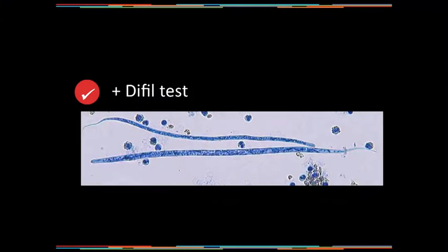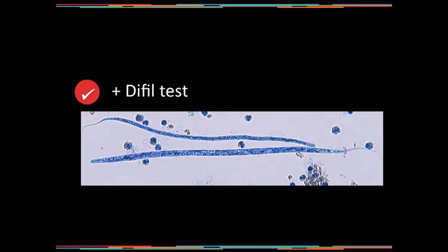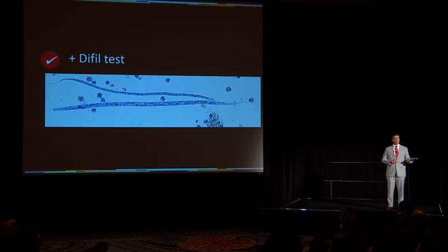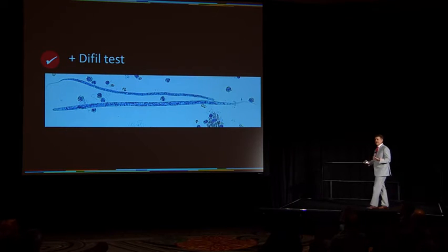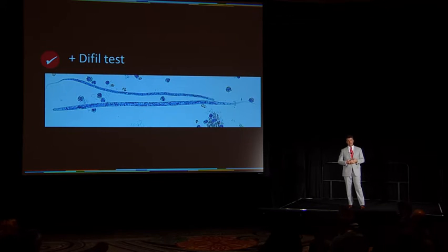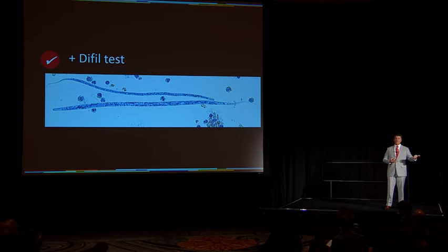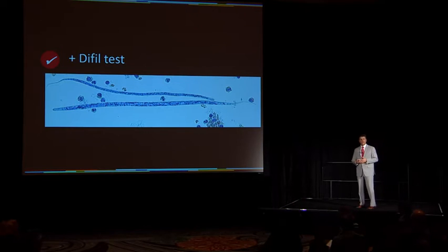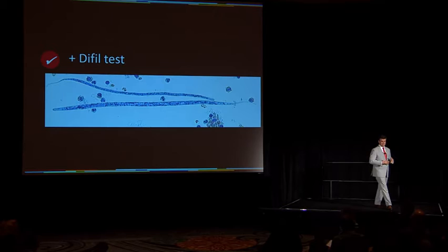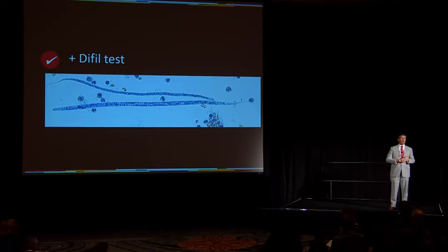How about dye fill tests? A dye fill test sounds like a great test — if we have circulating microfilaria and we can identify them as being Dirofilaria immitis, that's pretty strong evidence of an adult heartworm infection. But cats usually don't have circulating microfilaria. It's suggested that less than 20% of cats with an adult infection ever develop circulating microfilaria, and the vast majority of those have transient, low-concentration microfilaria. This makes dye fill tests a pretty weak, insensitive test for diagnosing adult infection.